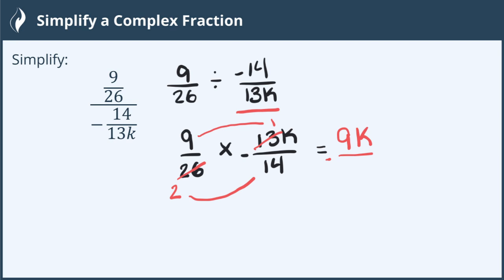What's left is 2 times 14 which is 28, and so my answer is negative 9k over 28. And if we've simplified all of the numbers before we multiply, then this fraction at the end is already in its simplest form, and that is the answer.